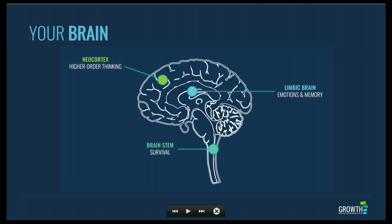The second layer of the brain is the limbic brain, which is responsible for our emotions and our memories. This pulls us along — things like passion, curiosity, love, or desire. These happen in the limbic brain. If we can tap into the limbic brain, we are much more likely to get people to want to do our learning.